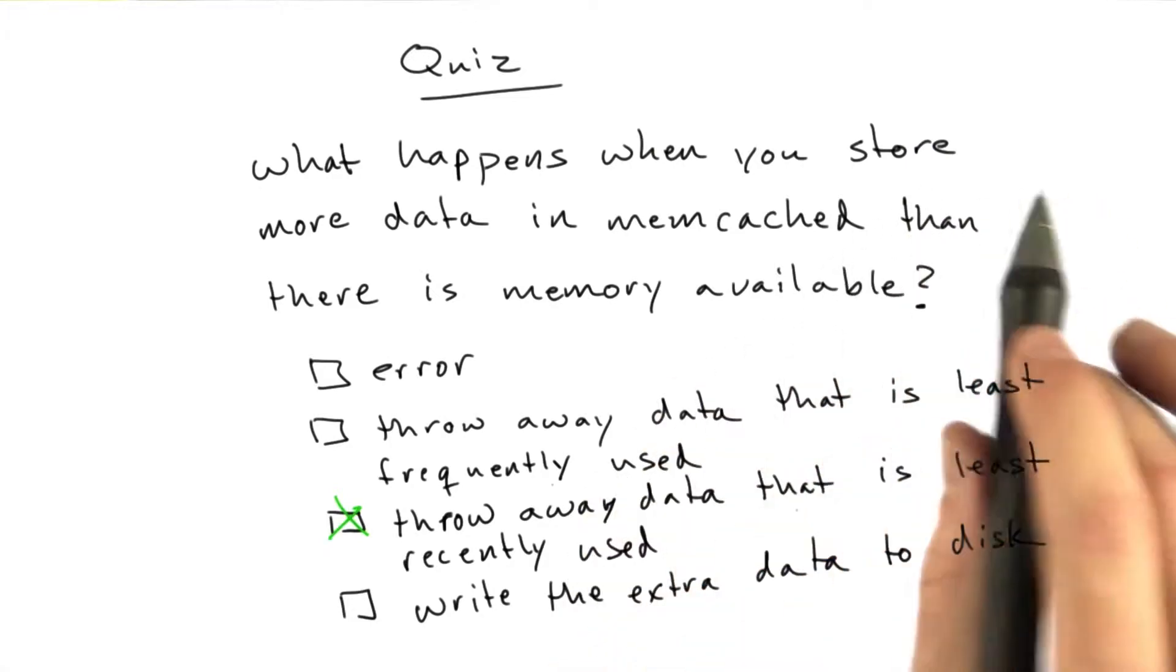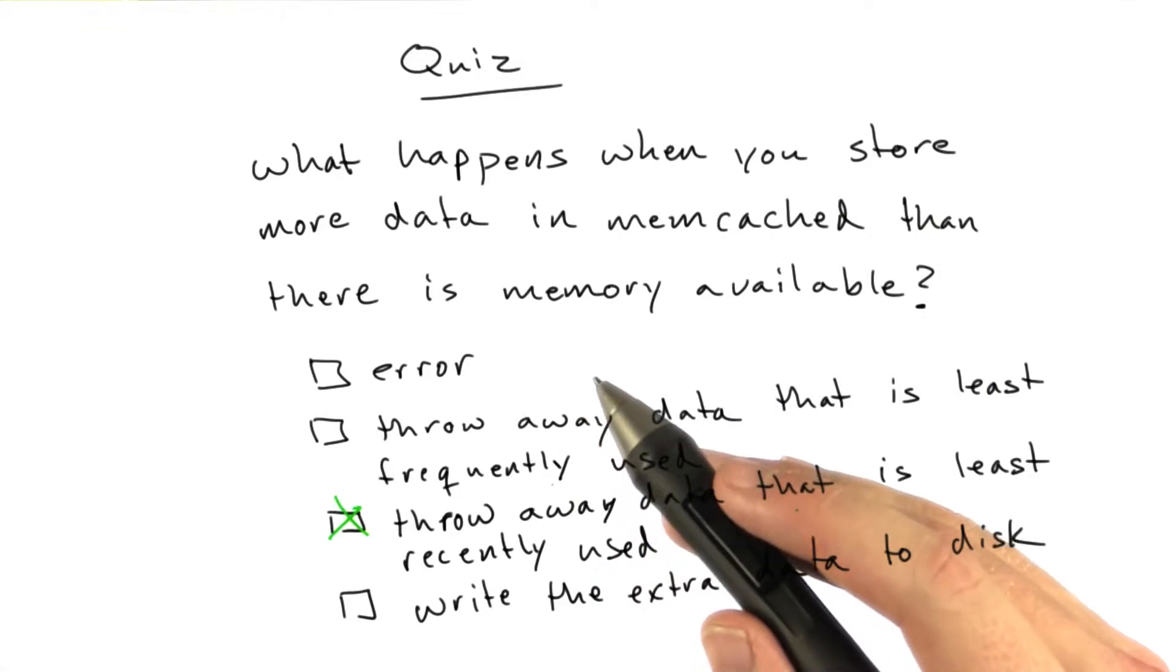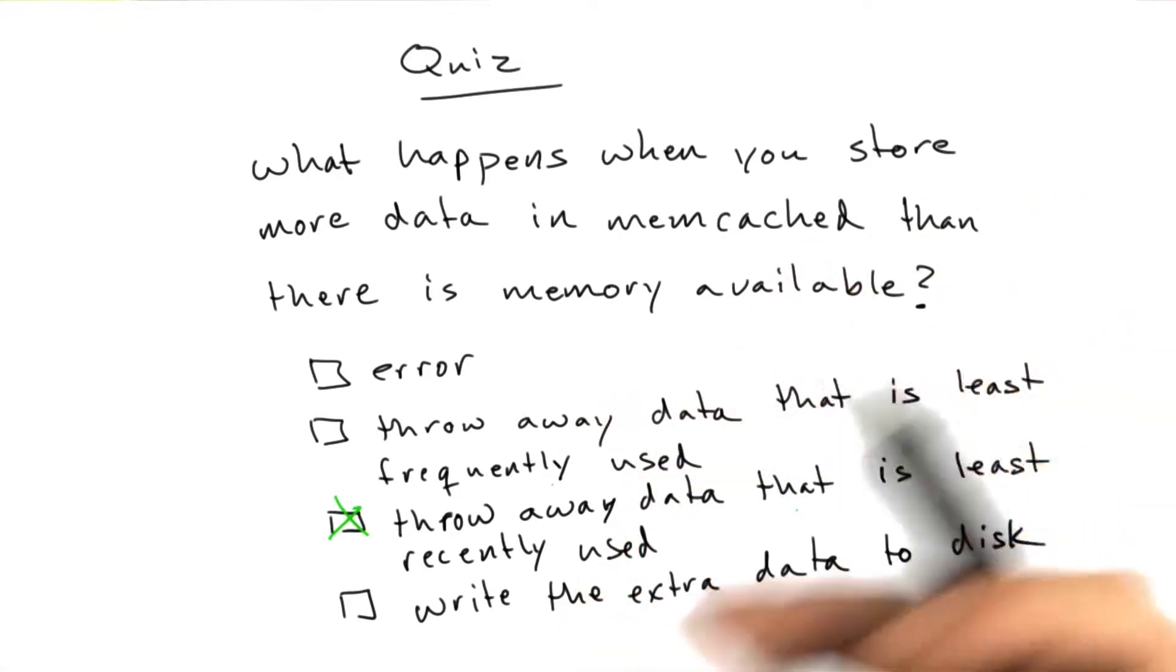So as you insert more and more keys into Memcached, if there's not enough room, keys that you haven't accessed in the longest amount of time just get purged from the cache automatically. So the cache automatically has the most recently accessed things.